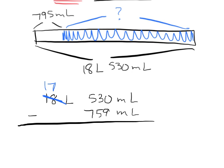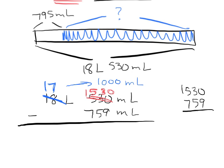That one liter we're borrowing or regrouping is equal to a thousand milliliters, so it takes the 530 milliliters and turns it into one thousand five hundred thirty milliliters. Now we can subtract — I'll do this on scratch paper since my work is getting a little messy.